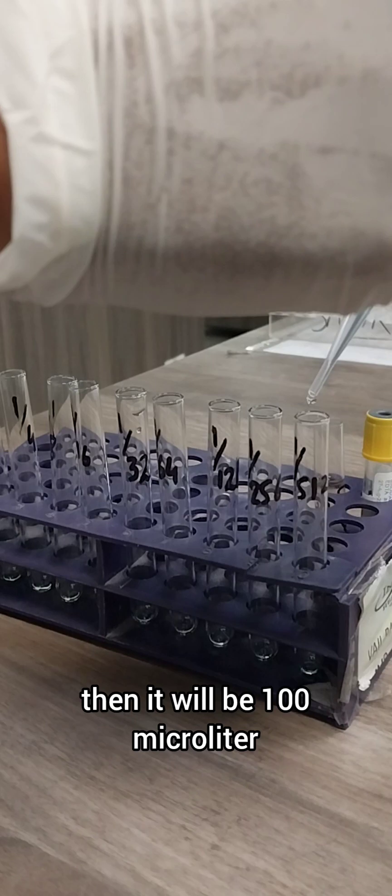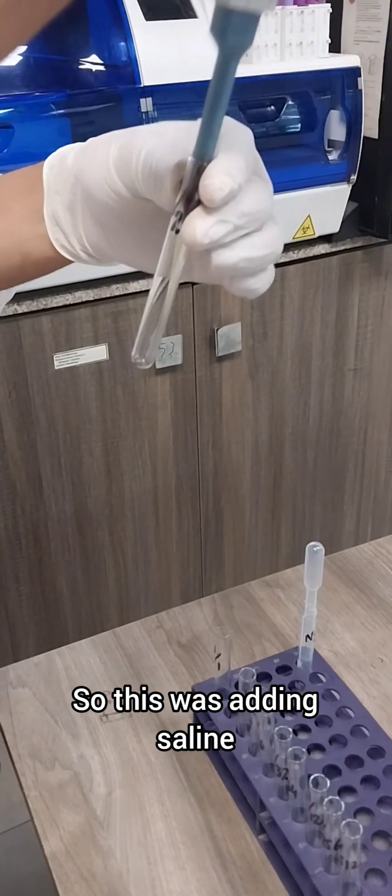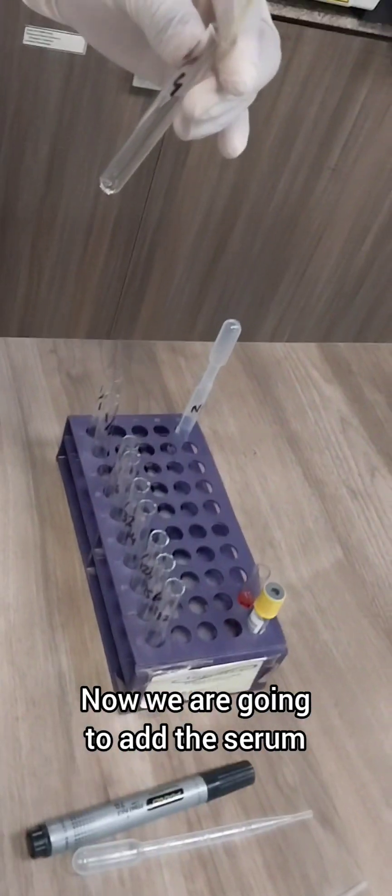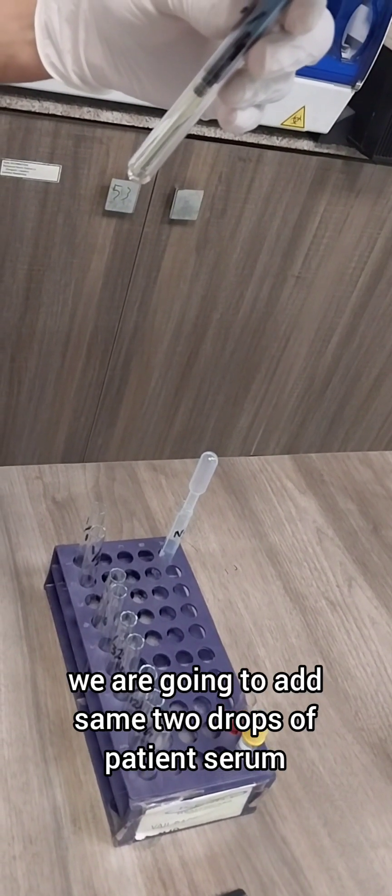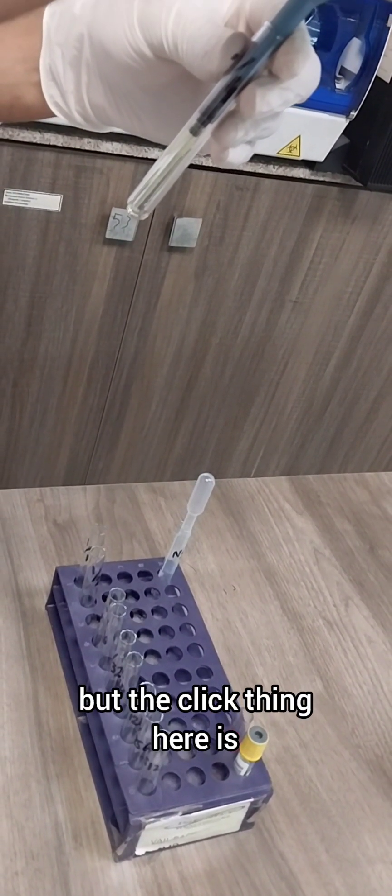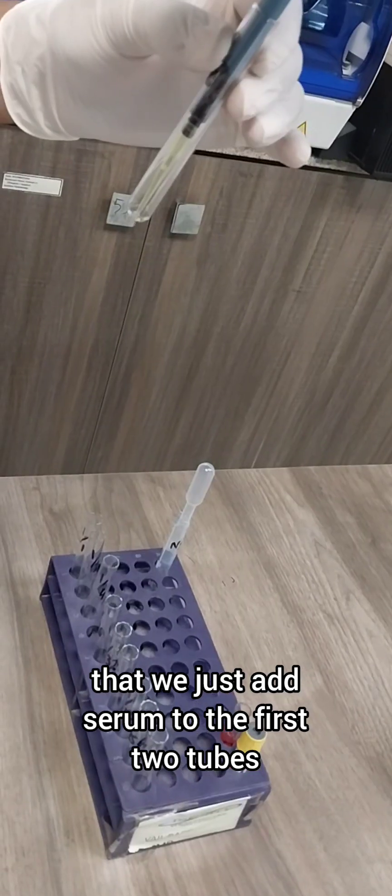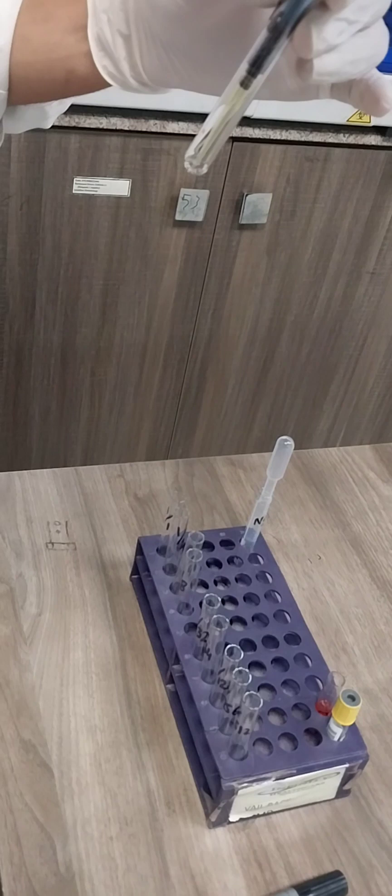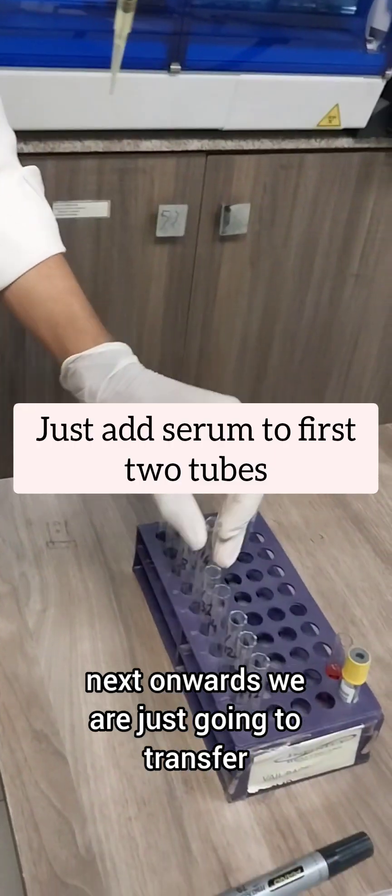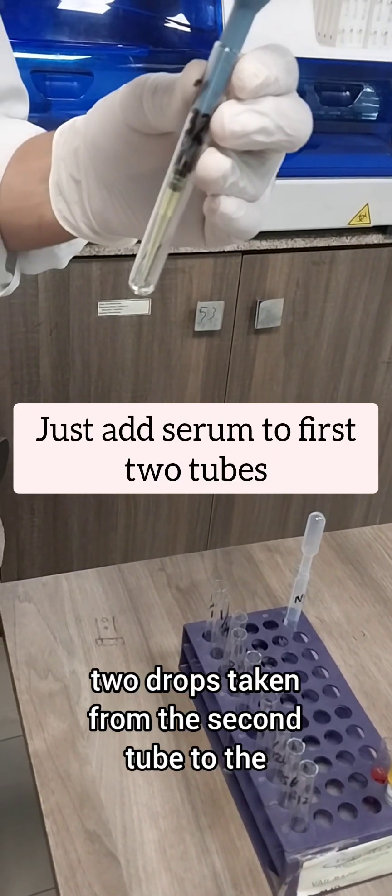If you're using a pipette, then it will be hundred microliters. So this was adding saline. Now we are going to add the serum. We are going to add the same two drops of patient serum, but the trick here is that we just add serum to the first two tubes.